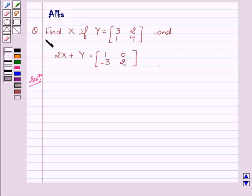Find x if Y equals [3, 2, 1, 4] and 2X plus Y equals the matrix [1, 0, minus 3, 2].